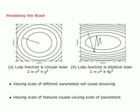Let us revisit the example used in several lectures: a bowl showing two different loss functions. The loss function on the left is a circular bowl, L = x² + y². The loss function on the right is an elliptical bowl, L = x² + 4y². In the case of the loss function on the right, varying scale of different parameters causes bouncing in gradient descent, as discussed in detail in an earlier lecture.